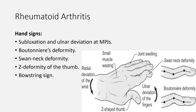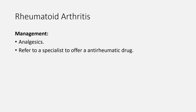There are also characteristic hand signs on examination, which include: subluxation and ulnar deviation at metacarpophalangeal joints, Boutonnière deformity (hyperflexion of proximal interphalangeal joint and hyperextension of distal interphalangeal joint), swan neck deformity (hyperextension of proximal interphalangeal joint and hyperflexion of distal interphalangeal joint), Z deformity of the thumb, and bowstring sign (tendons appear prominent and stretched across a shrunken carpus). For management, give the patient analgesics and refer to a specialist to offer a conventional disease-modifying anti-rheumatic drug.